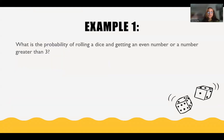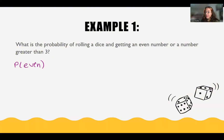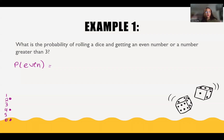Now let's do an example of union probability. The example says: what is the probability of rolling a die and getting an even number or a number greater than 3? First let's find the probability of having an even number. When I'm throwing a die, my outcomes are 1, 2, 3, 4, 5, and 6. Out of these, the numbers that are even are 2, 4, and 6 — so 3 favorable outcomes over my total amount of outcomes, which is 6.